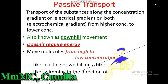Passive transport may be defined as transport of substances along the concentration gradient or electrical gradient, or both — that is electrochemical gradient — from a region of higher concentration to a region of lower concentration. It is also known as downhill movement. It does not require any energy. The molecule moves from high concentration to low concentration, like swimming in the direction of water flow.